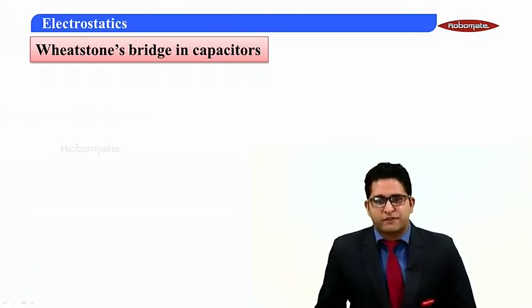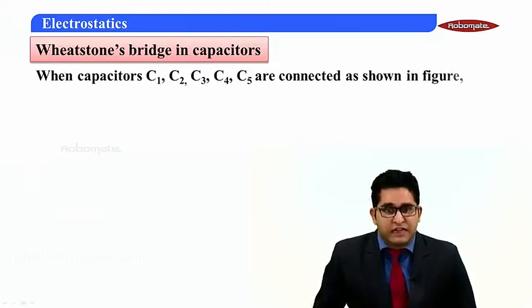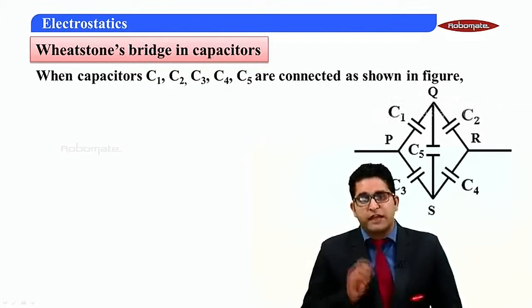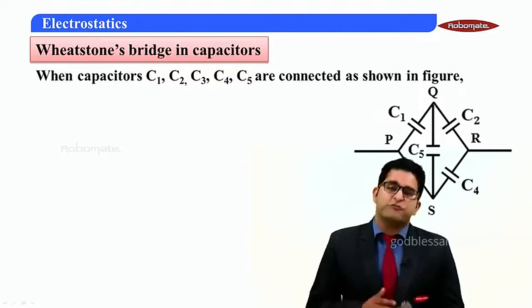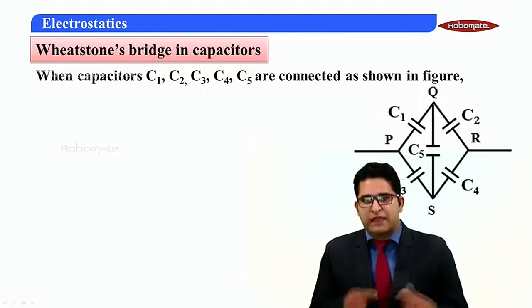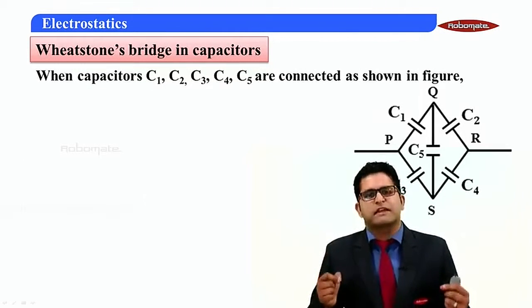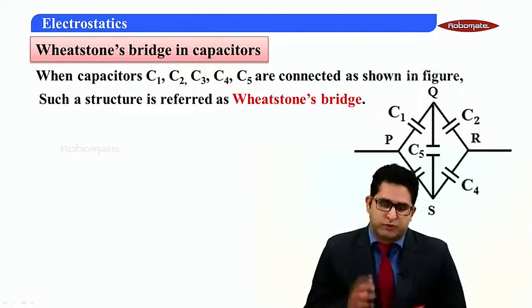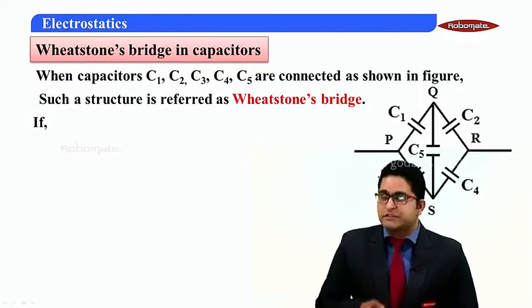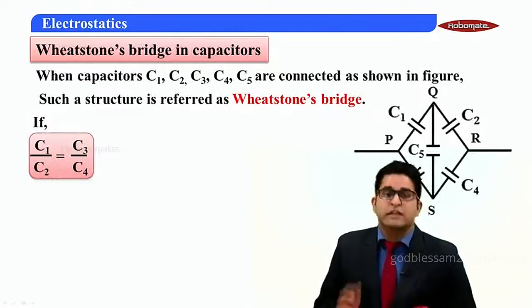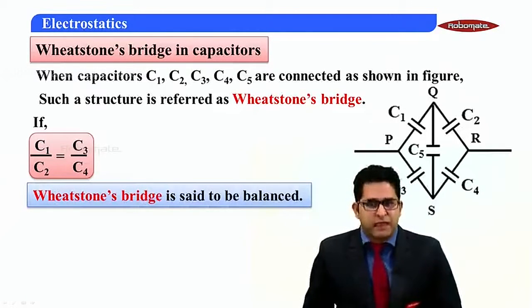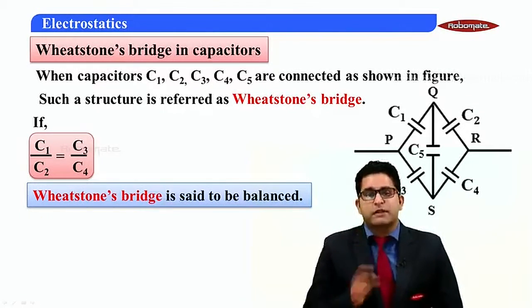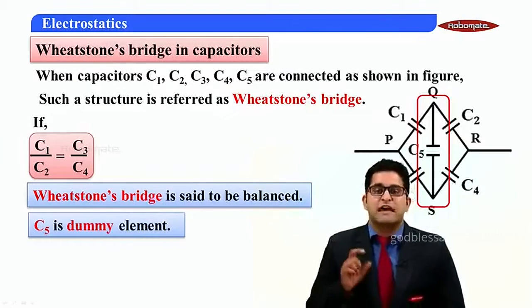If I am having 5 capacitors — C1, C2, C3, C4 — they are forming 4 sides of quadrilateral PQRS, and the 5th capacitor C5 is connected across diagonal QS. The other 2 diagonal points are connected to a wire which will be connected to some external source. This particular arrangement is basically referred to as Wheatstone Bridge.